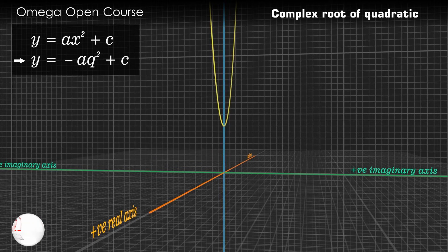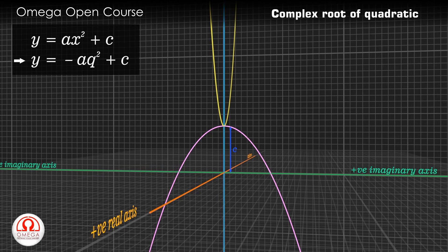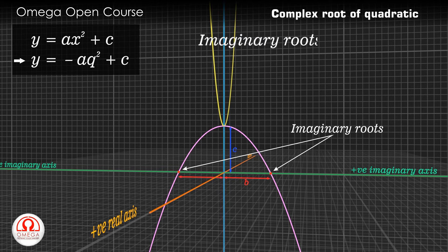So our expression reduces to y = −aq² + c. Let us plot this graph in the plane formed by the y-axis and the imaginary axis. You can see this graph too will intersect the y-axis at distance c above the origin — that is, it will touch the graph we drew on the real axis. The points where this graph intersects the imaginary axis are the complex roots of the given expression. If the points of intersection are at distance b from the origin, then the complex roots are ib and −ib.